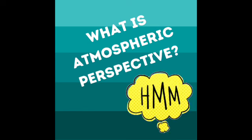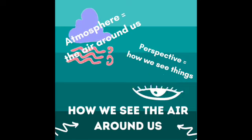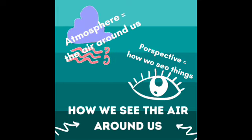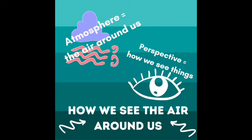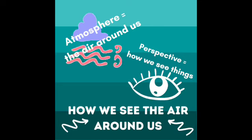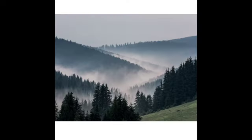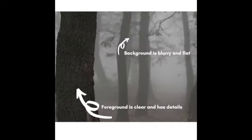What is atmospheric perspective? Atmosphere is the air around us and perspective is how we see things. So when we put it all together it's basically how we see the air around us. Here is an example of atmospheric perspective. Things up front are really clear and far away they're fuzzy. So the background ends up being blurry and flat without a lot of details, and the foreground that's closest to us is clear and we can see a lot more details.